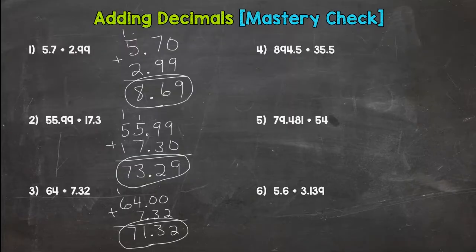Number four. Eight hundred ninety four and five tenths plus thirty-five and five tenths. Line them up. We don't need any placeholder zeros for this one. We get a ten. Bring down your decimal. We get another ten. Thirteen. And nine. So nine hundred thirty. We got a whole number there for number four.